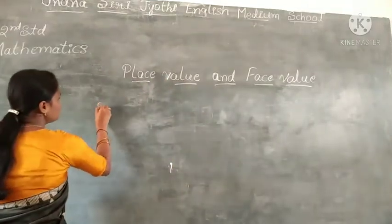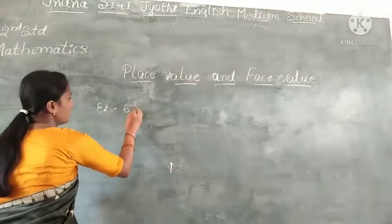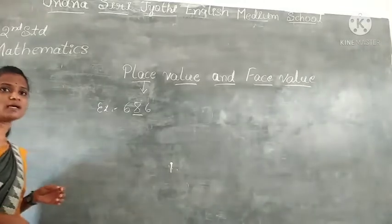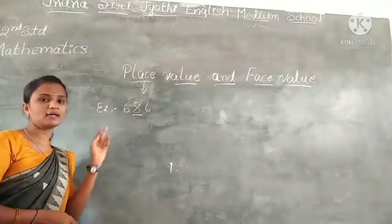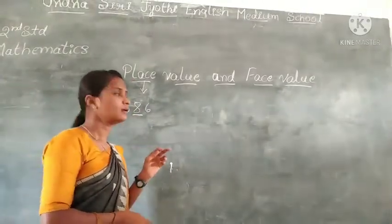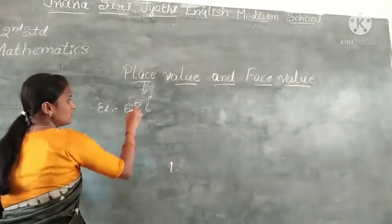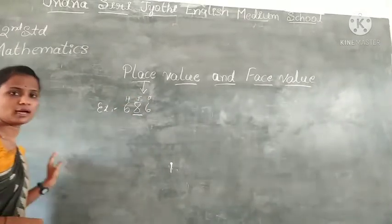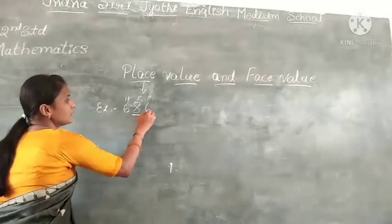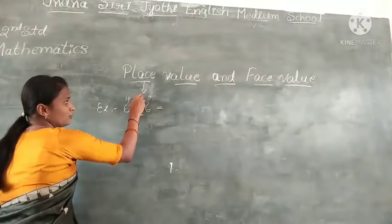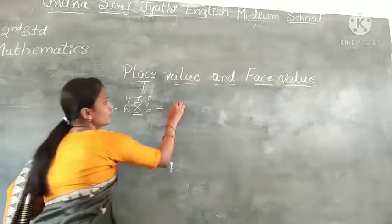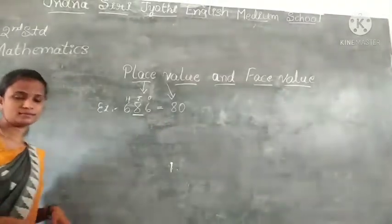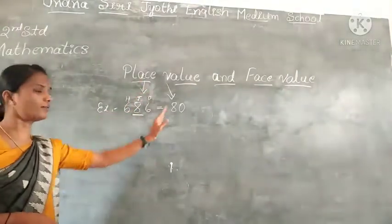For example, in 686, what is the place value of 8? See here: 6 is in the 1's place, 8 is in the 10's place, and 6 is in the 100's place. So 8 is in the 10's place. That's why you write 80. This is the place value of 8.